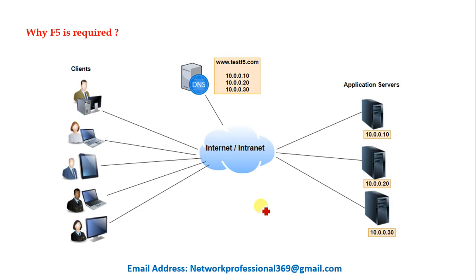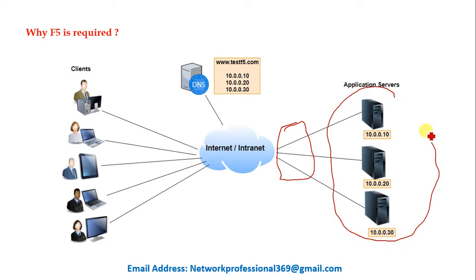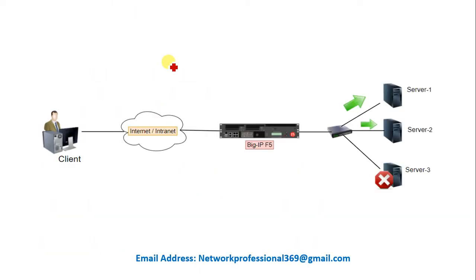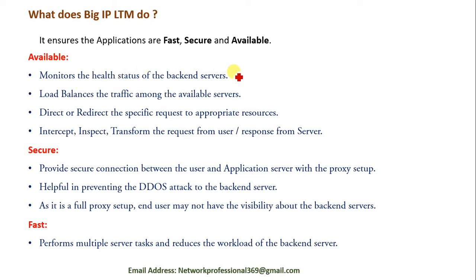To overcome this drawback, F5 came with a solution: place a device close to the servers that monitors their health status and load balances based on that. This is how F5 came into the market. The BIG-IP F5 LTM module ensures that applications are fast, secure, and available. Let's discuss each of these three major capabilities one by one with examples. The first is availability.